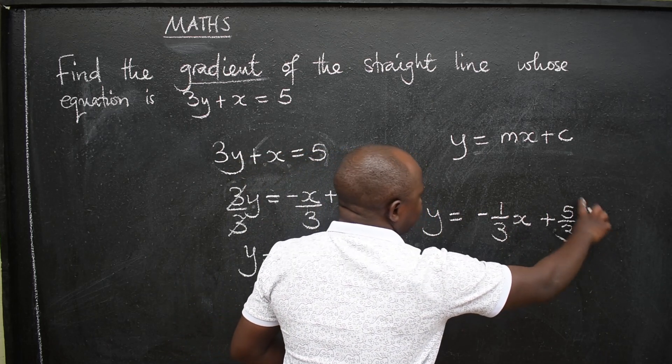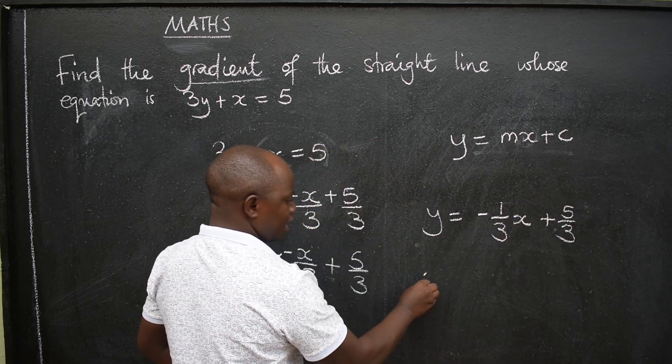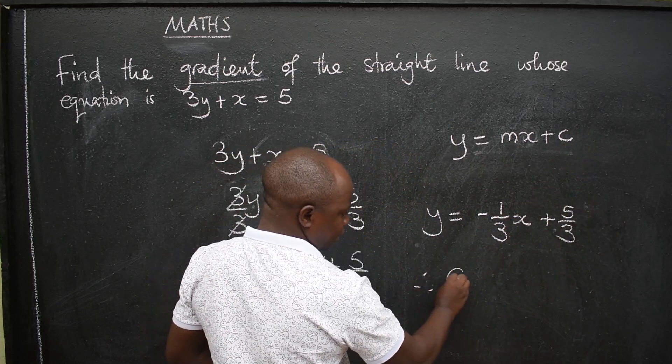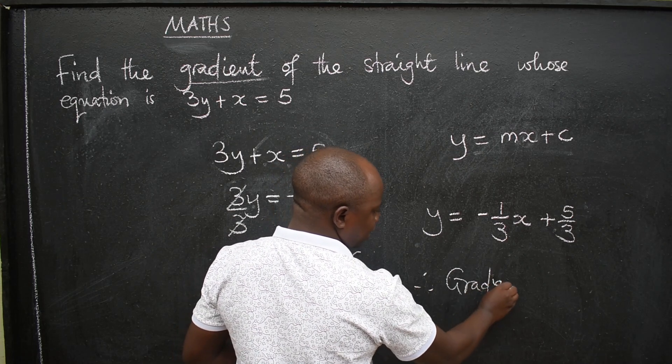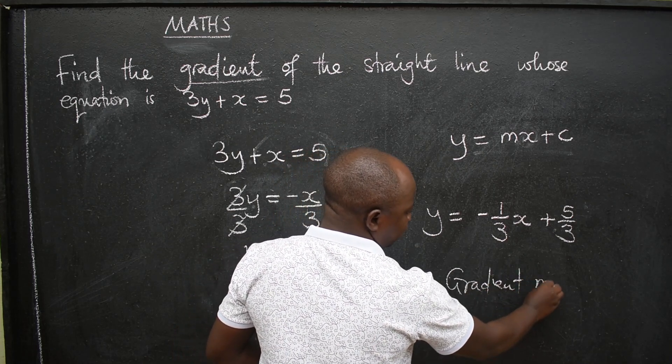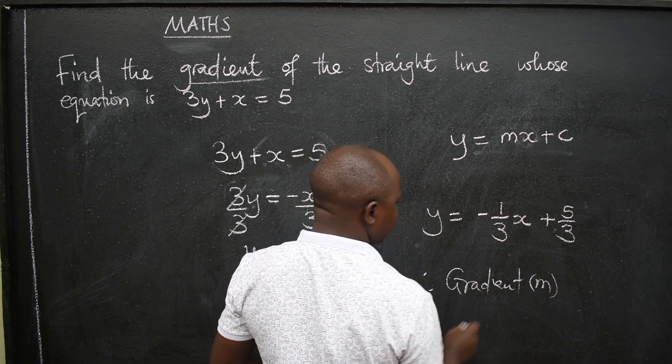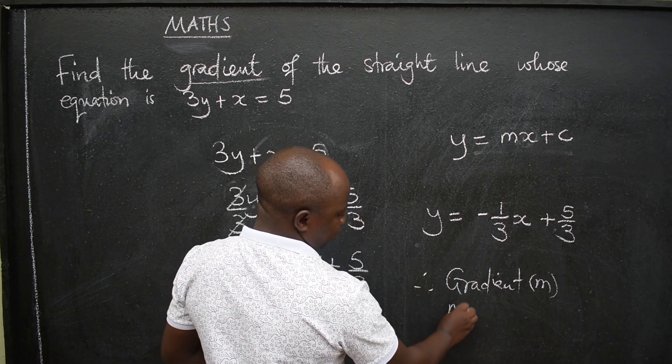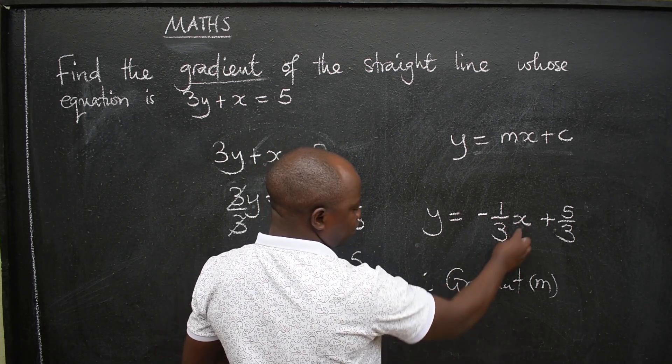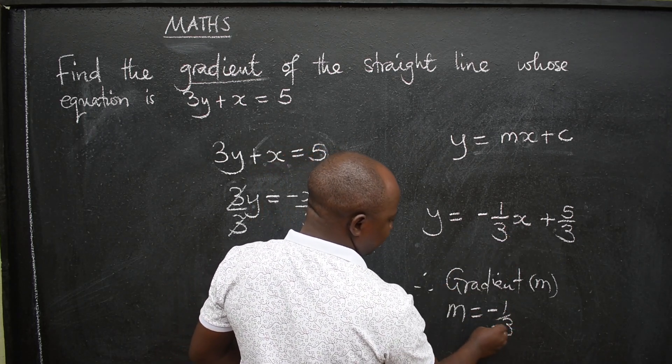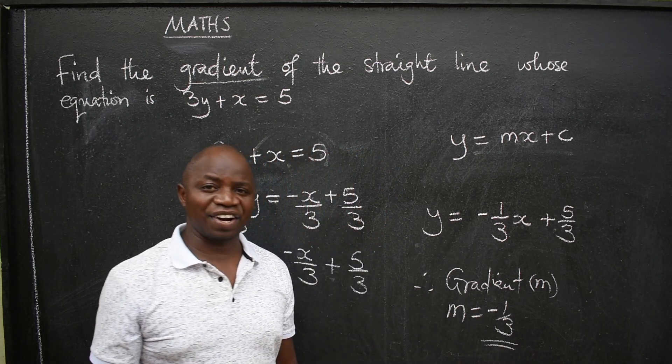Now that the equation is in this form, I would say therefore gradient, or simply use m. The gradient m will be equal to the coefficient of x, which is -1/3. That is the gradient.